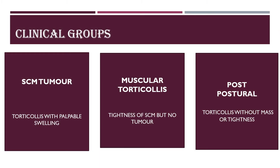Children with CMT can be subdivided into three clinical groups. In Group 1, the child presents with stiffness and a palpable swelling or tumor. In Group 2 (muscular torticollis), there is tightness but no tumor or swelling. In Group 3, there is neither stiffness nor a palpable tumor - it is called postural torticollis, seen after maintaining a certain posture for a longer period of time.